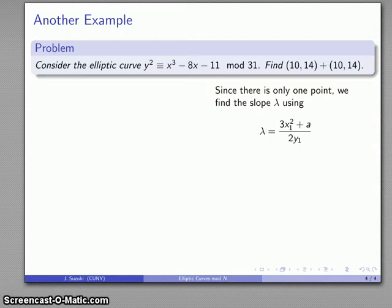Now there's only one point, so we would be looking at the slope of the tangent line, which we're going to find using our differential equation, our derivative formula. Substituting our x and y coordinates, we get a slope of 292 over 38.